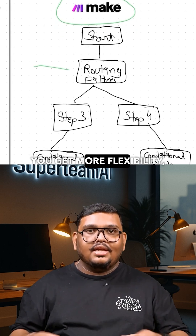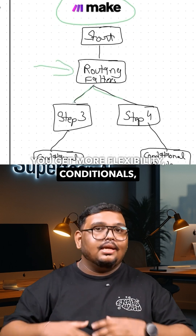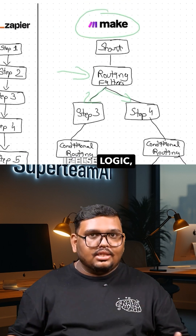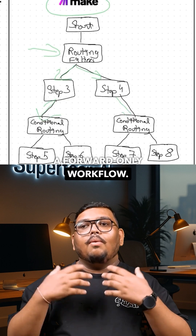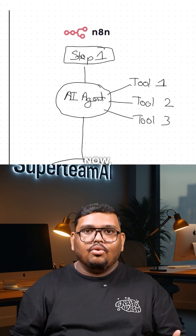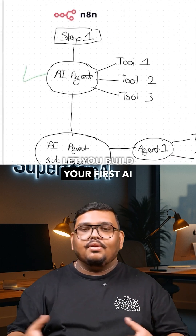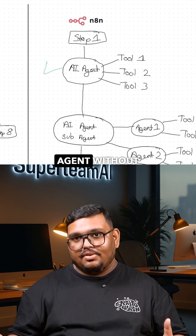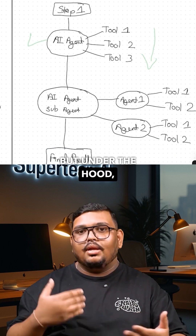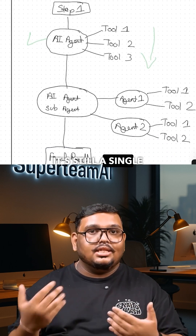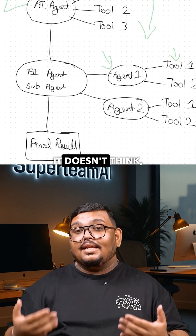Same with make.com — you get more flexibility, conditionals, if-else logic, but it's still a forward-only workflow. Tools like n8n let you build your first AI agent without code, but under the hood it's still a single automation flow.